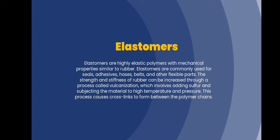Elastomers. Elastomers are highly elastic polymers with mechanical properties similar to rubber. Elastomers are commonly used for seals, adhesives, hoses, belts, and other flexible parts. The strength and stiffness of rubber can be increased through a process called vulcanization, which involves adding sulfur and subjecting the material to high temperature and pressure. This process causes cross-links to form between the polymer chains.